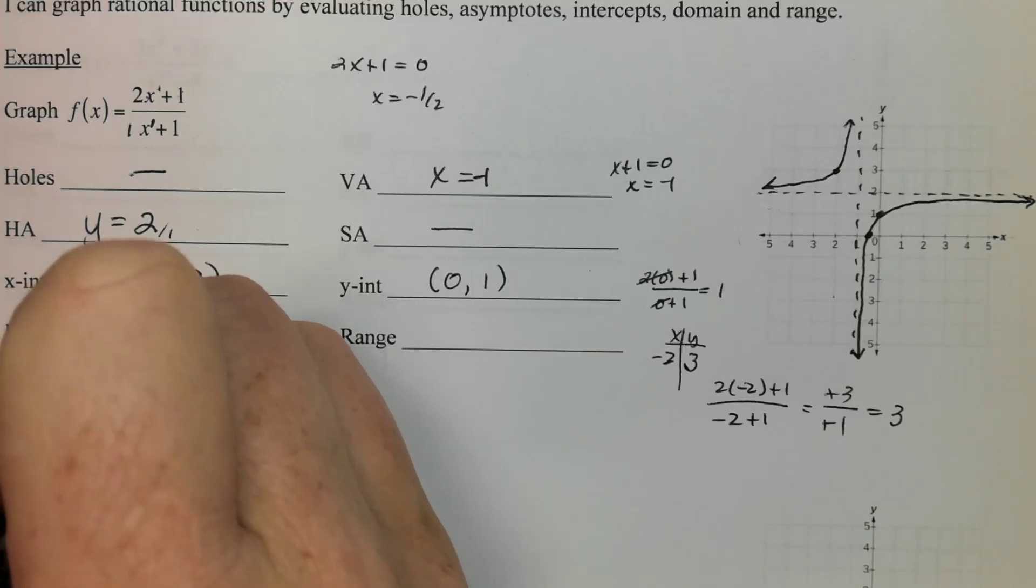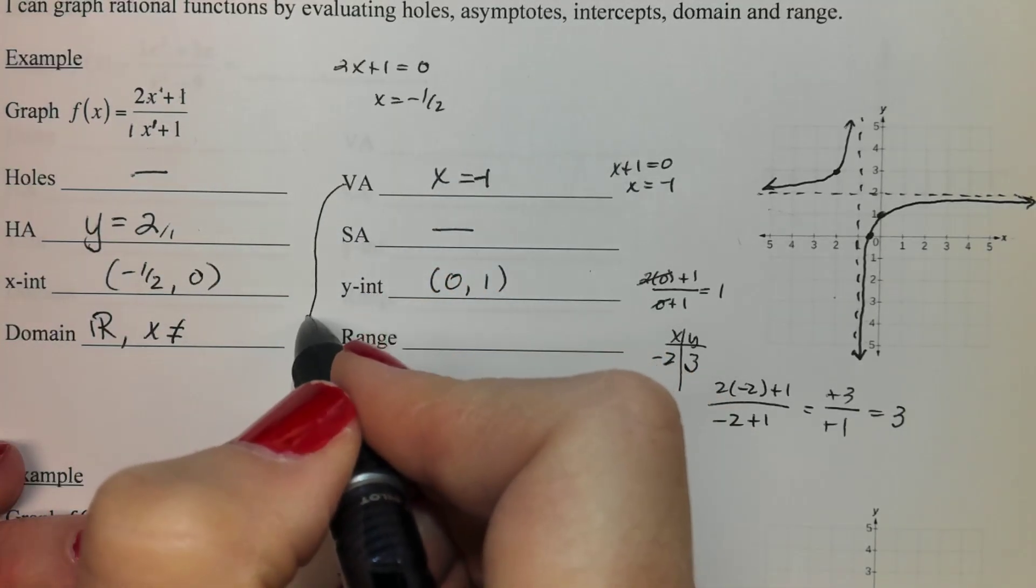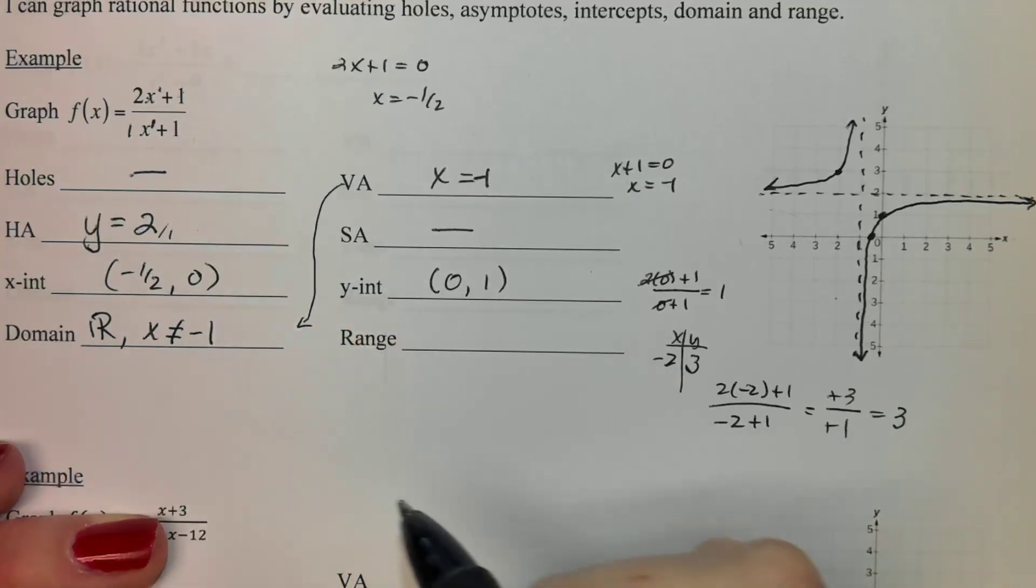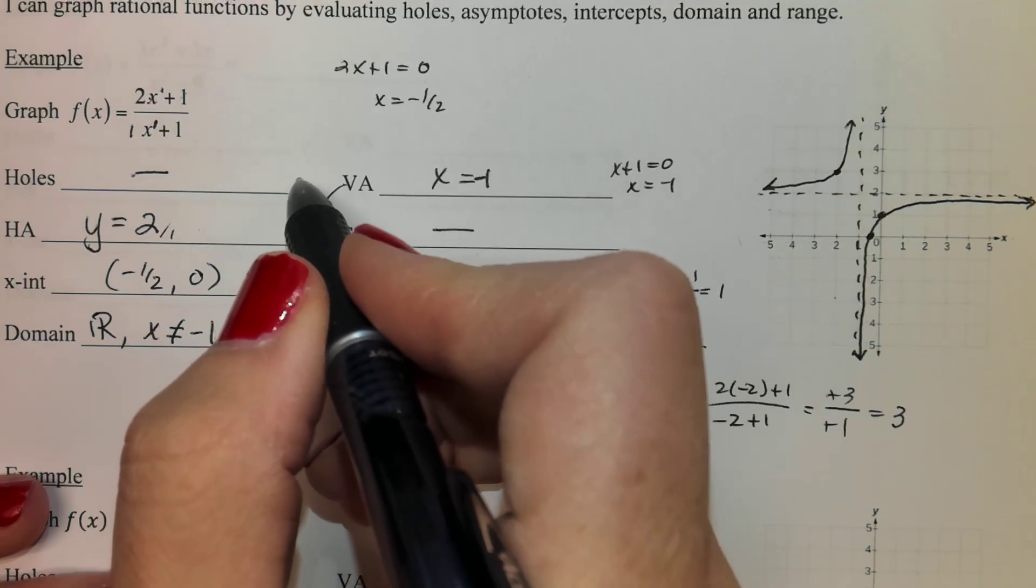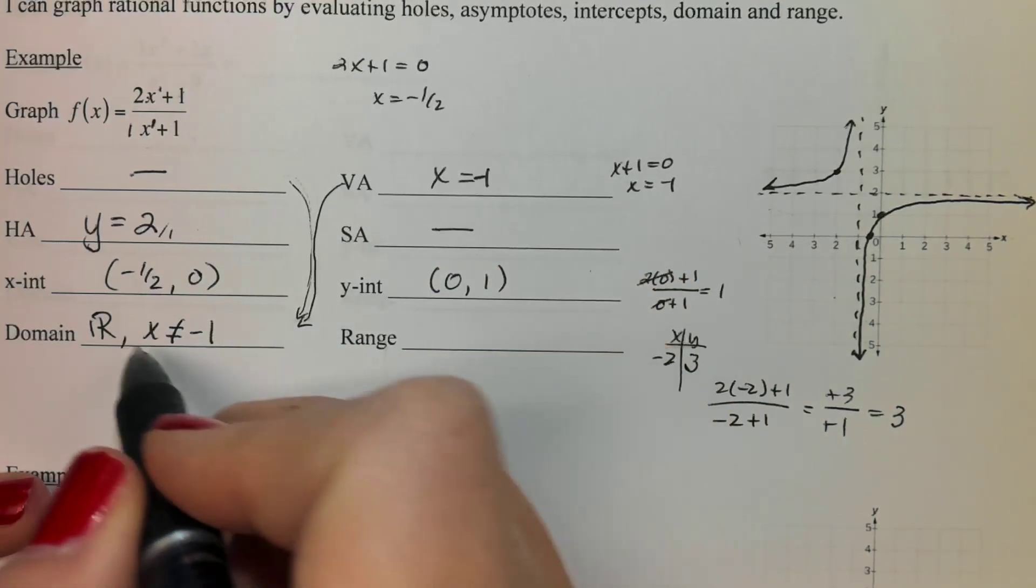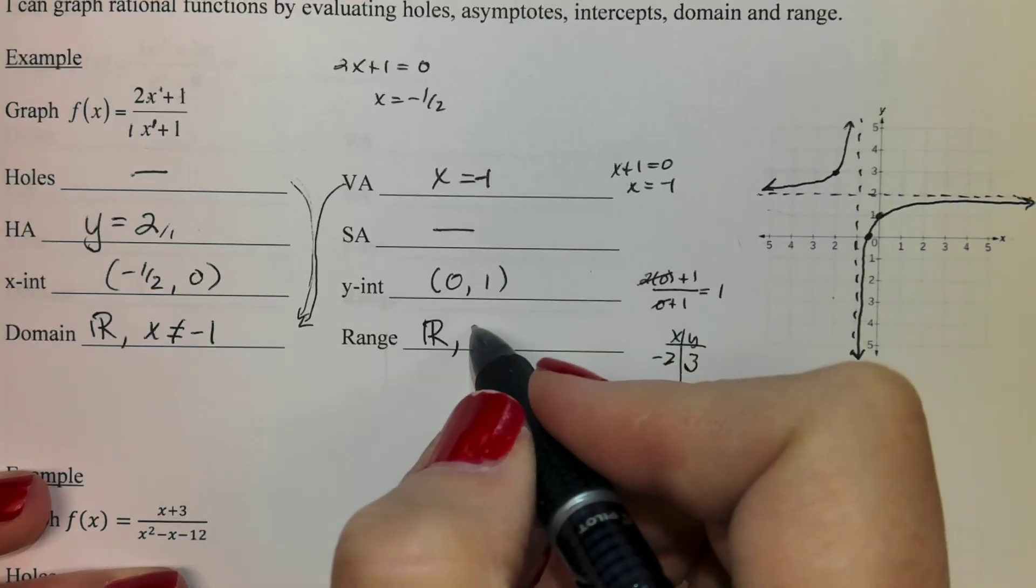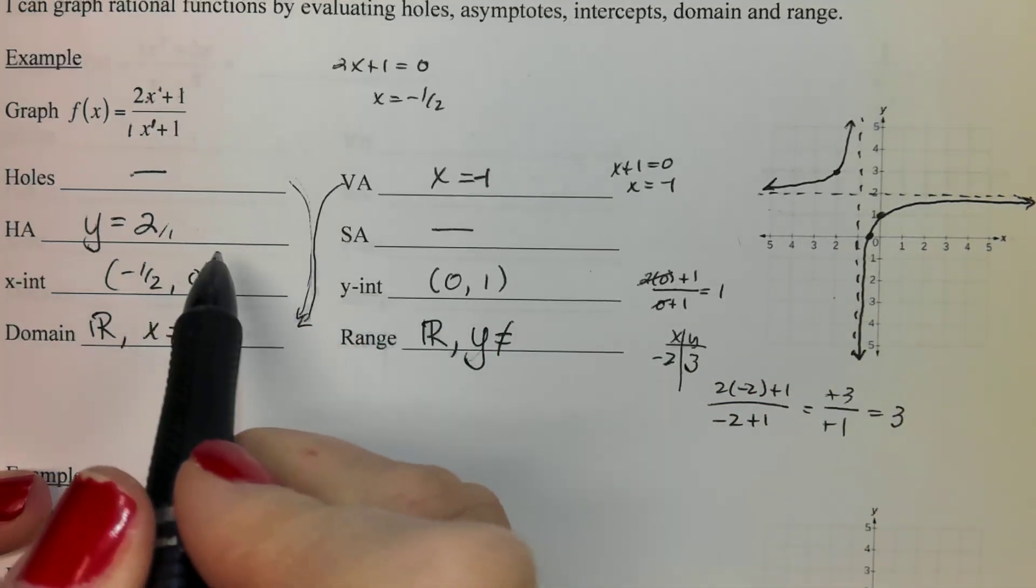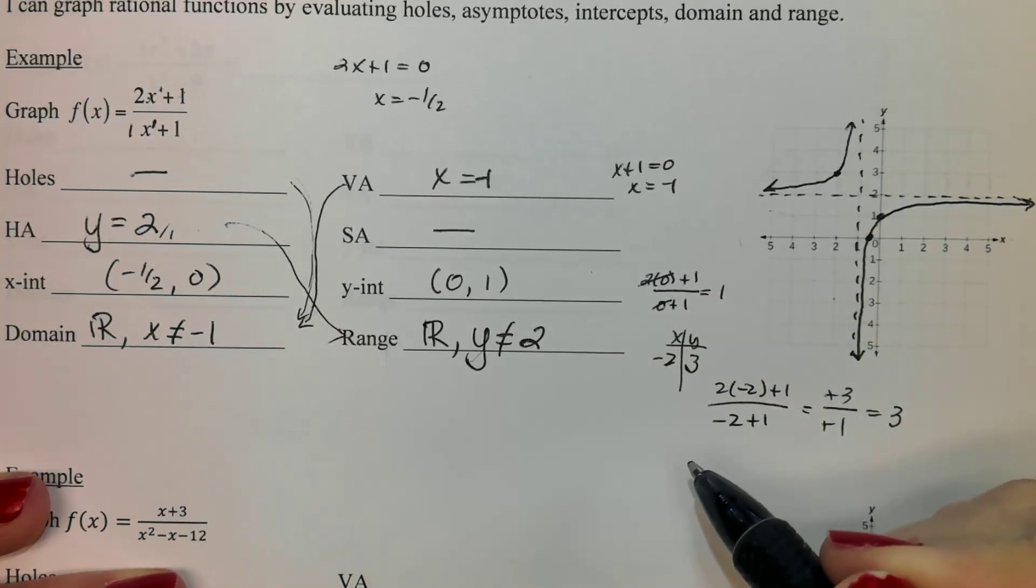So there's my function. Let's do the domain. Domain is going to be all real numbers except if you ever have a VA you can't be that. So we can't be negative one. That's where my asymptote is. And if we had had any holes it would also be those but we didn't have any this time. So that's my domain. Range is also going to be all real numbers except this time it's y can't be and y for sure can't be any HAs. So this for us will be a two.